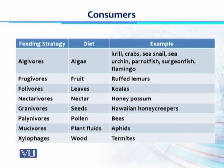Granivores are consumers which feed on seeds — for example, honeycreepers and several other birds. Palynivores feed on pollen — for example, honey bees. Mucivores feed on plant fluids — for example, aphids. Xylophages feed on wood — for example, termites. So there are eight different types of herbivores based on their feeding habits, providing a broad network of energy sources.